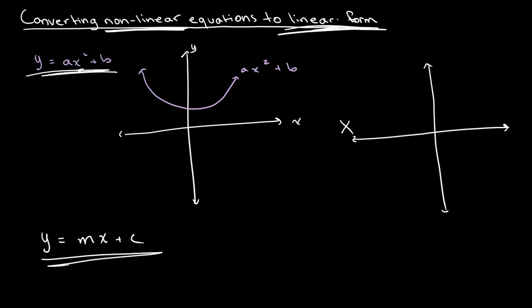Now if we take another set of axes — let's call them capital X and capital Y — in order to draw a straight line all we need is an equation in the form Y is equal to M times capital X plus C. Both formats follow the same structure; only the values on our axes will differ.